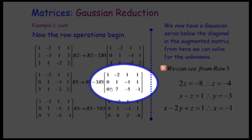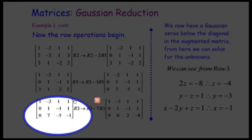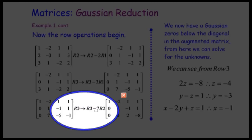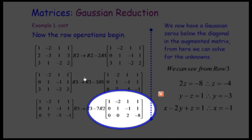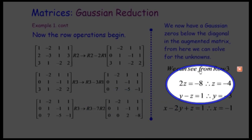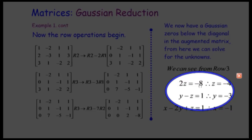We then subtract 7 times row 2 from row 3 to get zeros below the diagonal. So we now have zeros below the diagonal — note the diagonal doesn't go all the way across because we've augmented the matrix. From this situation we can set up equations and solve for our values.